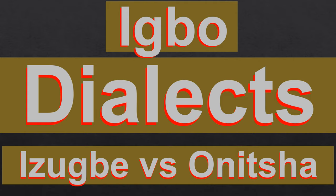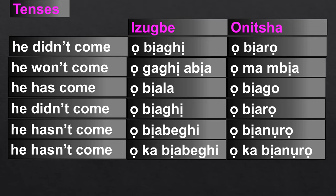In this lesson, I'll point out some differences between the Ibo-Izwe dialect and the Onicha dialect. Let's start with tenses.